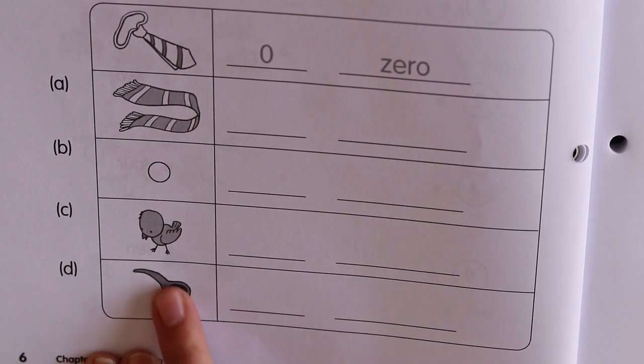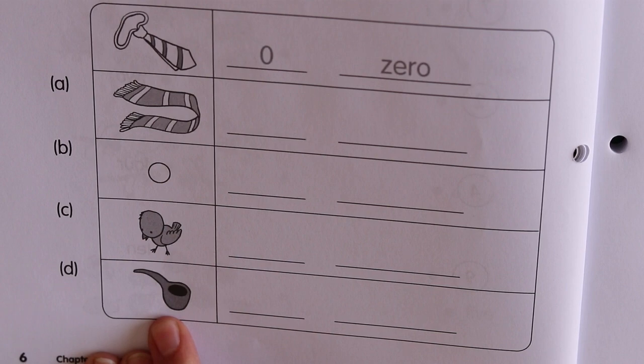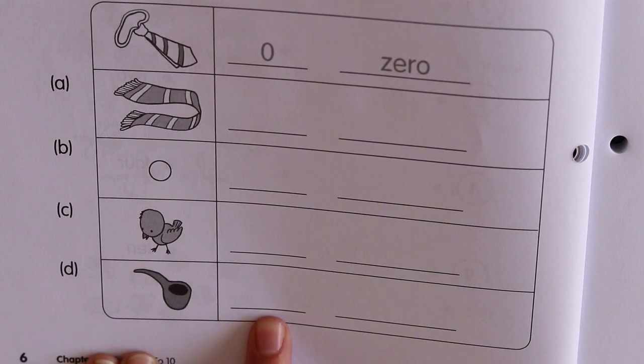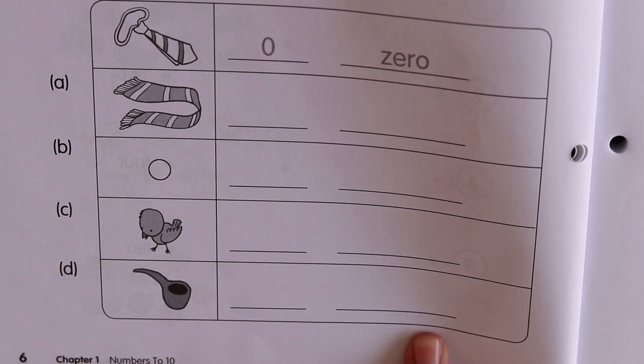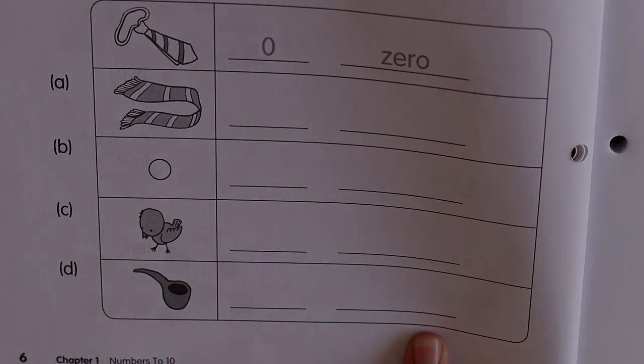Count how many pipes there are. This is called a pipe. Add something that somebody can smoke. Write the number and write the name. Good. That's all for today.